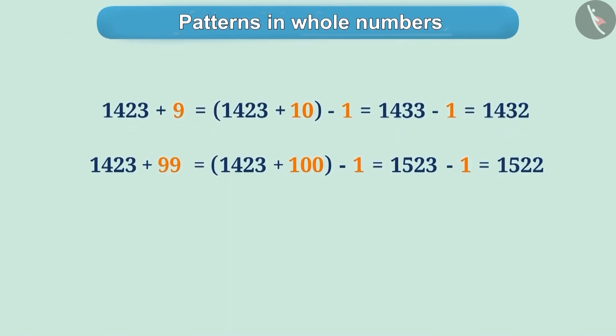Let's see this pattern. In order to make the calculation of 1,423 plus 9 easy, 10 is added to 1,423 and 1 is subtracted from the result. Similarly, to simplify 1,423 plus 99, 100 is added to 1,423 and 1 is subtracted from the result.